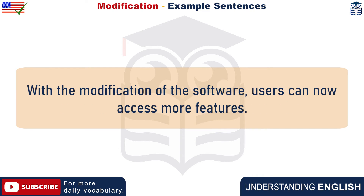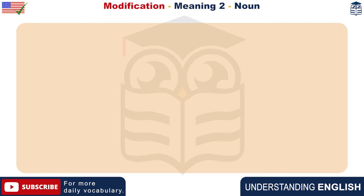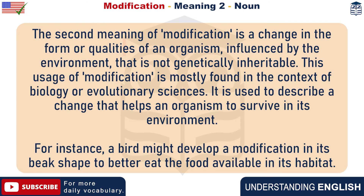With the modification of the software, users can now access more features. The second meaning of modification is a change in the form or qualities of an organism, influenced by the environment, that is not genetically inheritable. This usage of modification is mostly found in the context of biology or evolutionary sciences.